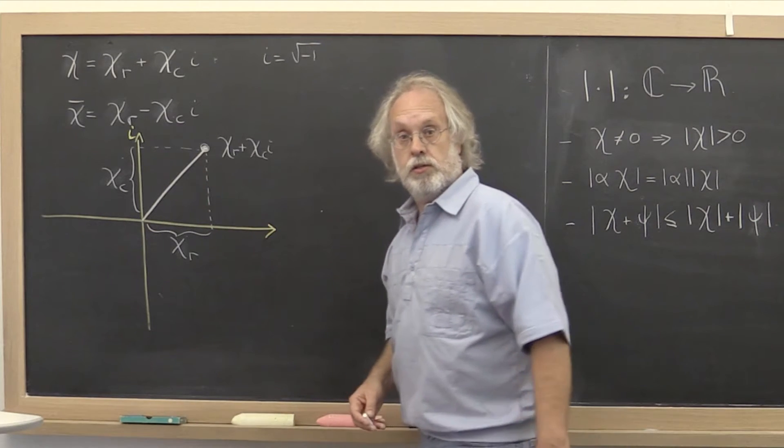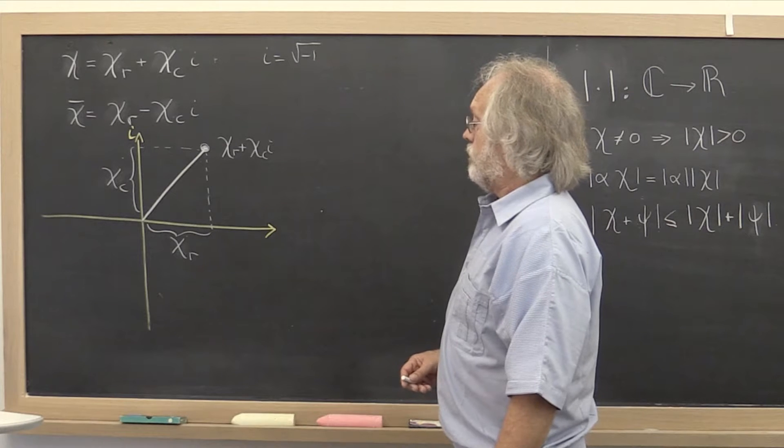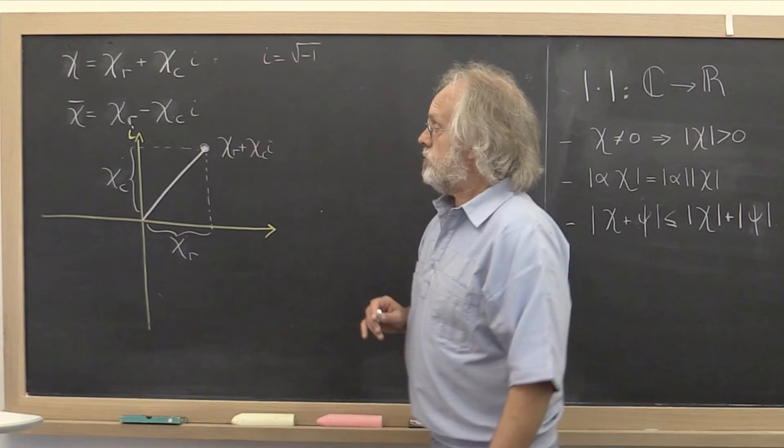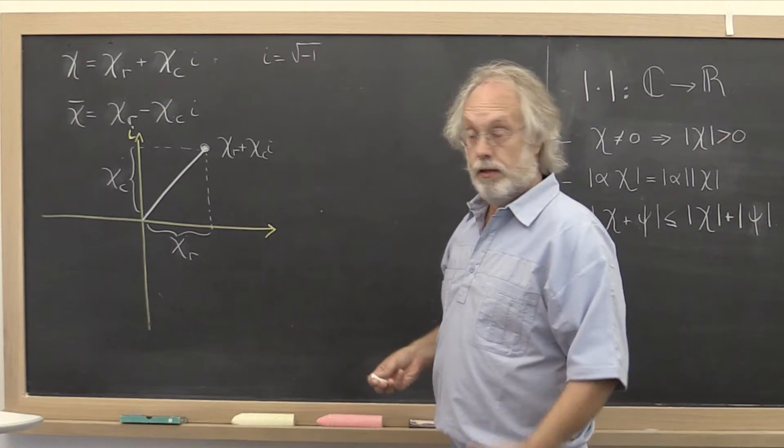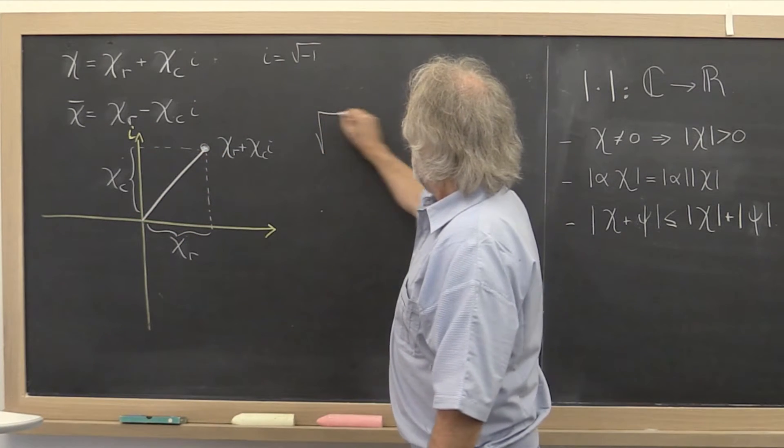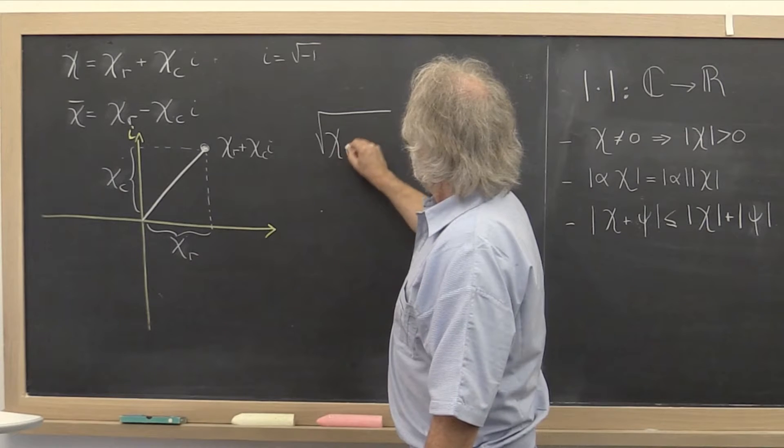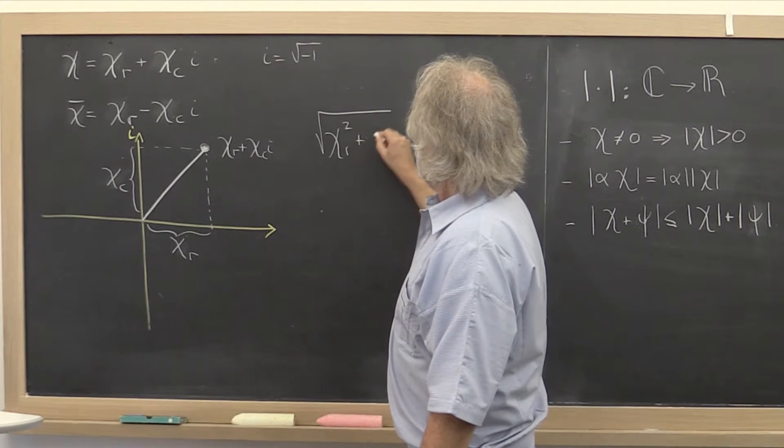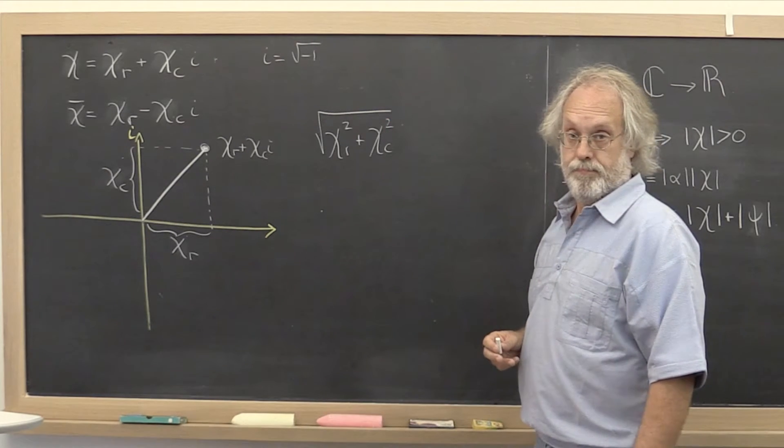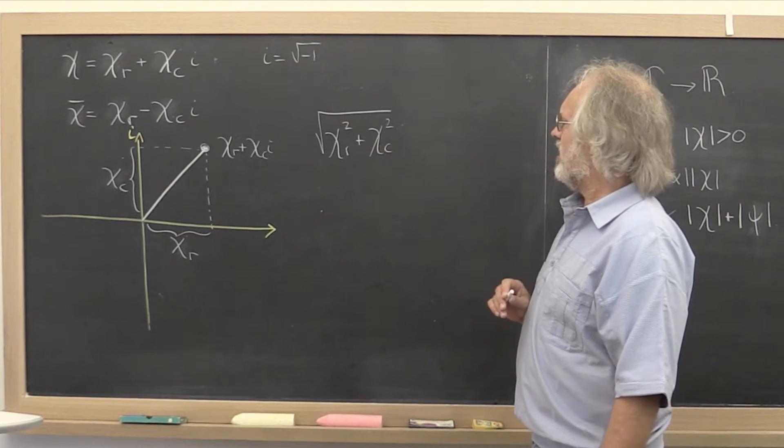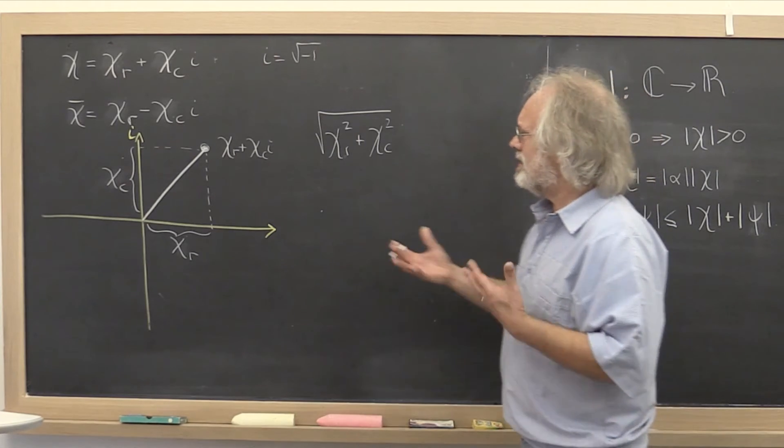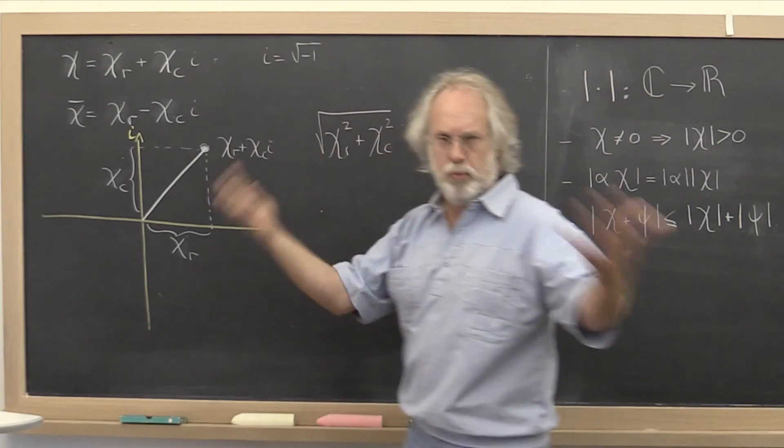And the distance from here to here, then, is given by the square root of the real part squared plus the imaginary part squared. That's the absolute value of chi.